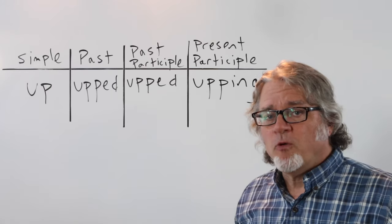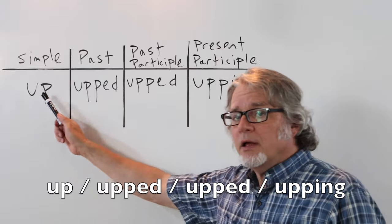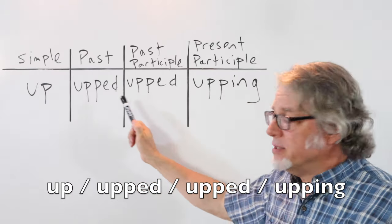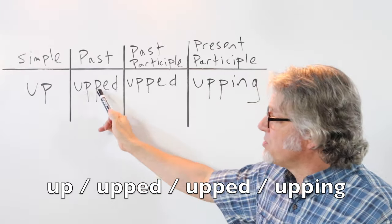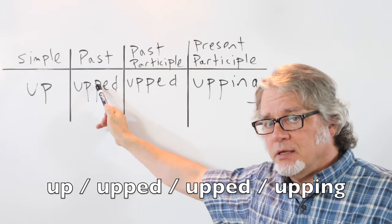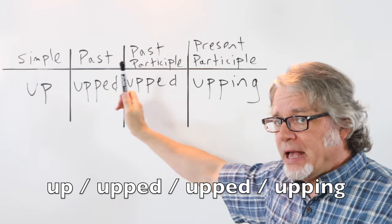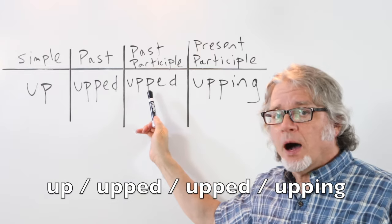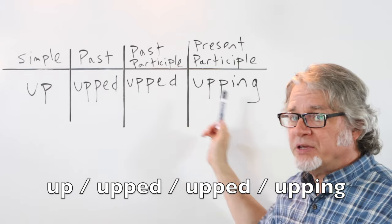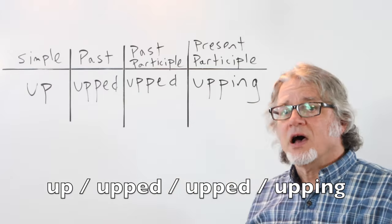The simple form is up. The past tense is upped. Notice that you have to double the P. The past participle is upped and the present participle is upping.